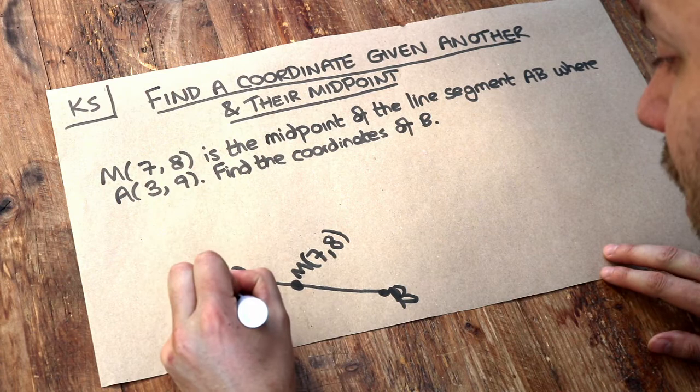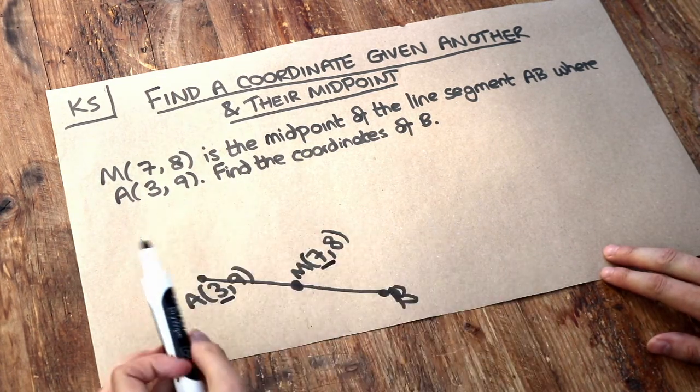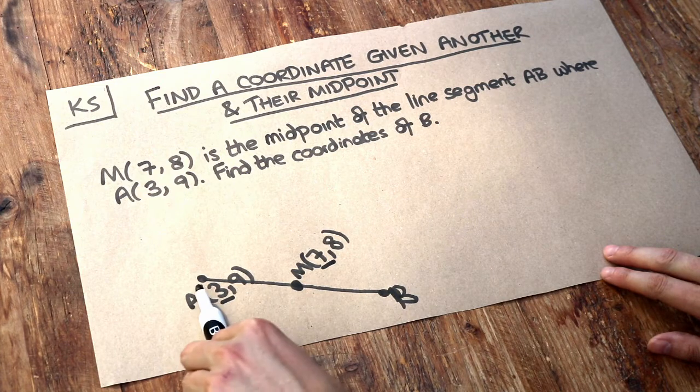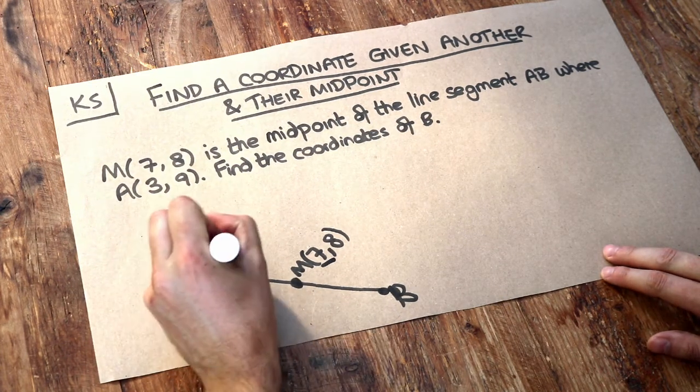Now let's look at the x values. This x value here is 3. This x value here is 7. Now can you see that this x value to get from A to M, the midpoint, is going up by 4?